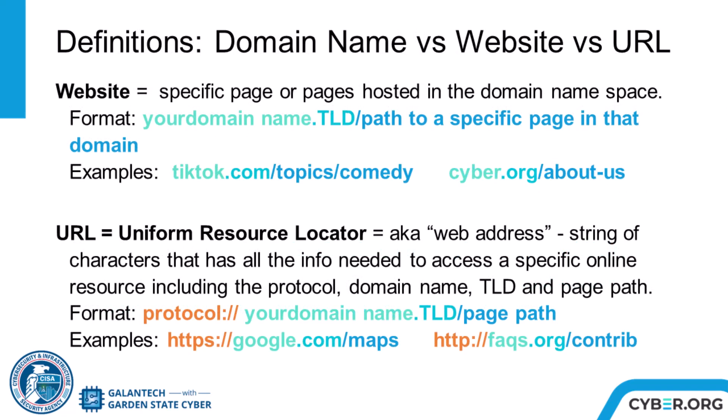A website can be just one HTML page, or a website can be hundreds of pages created using many types of code. But no matter what, all website resource paths start with the domain name. The Uniform Resource Locator, or URL, is where it all comes together to be the web address that most people recognize. This is what we type in the browser address bar. When you link to an open resource, you are using the resource's URL with a protocol, then your domain name, followed by the top-level domain, and finally your page path. These terms are key to how the internet is organized.